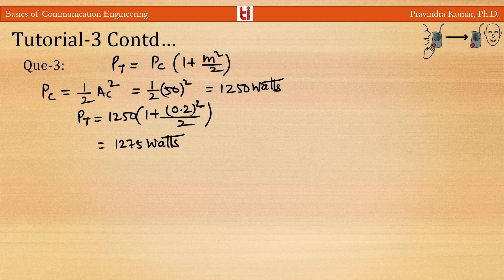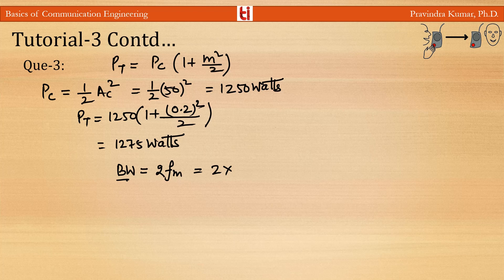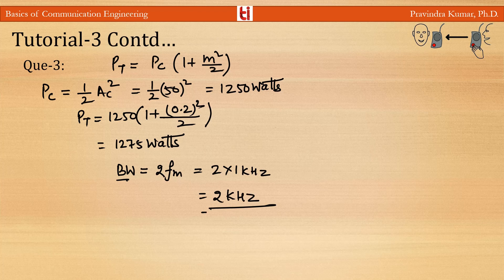The bandwidth of the modulated signal equals 2 times the bandwidth of the modulating signal, which equals 2·fm. So bandwidth = 2 × 1 kHz = 2 kilohertz.